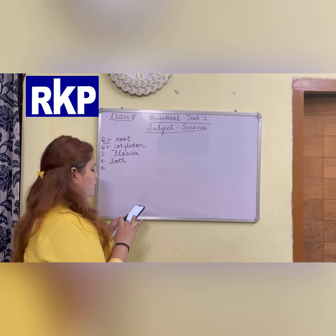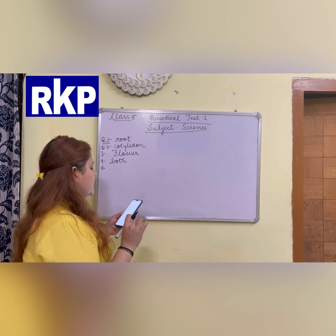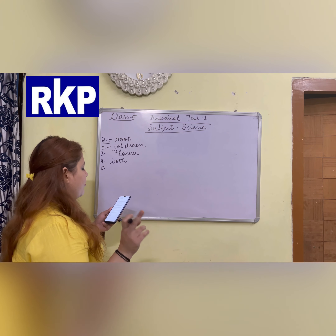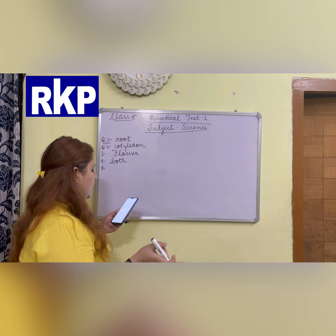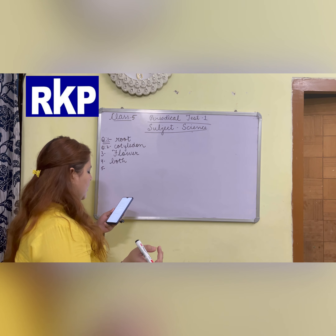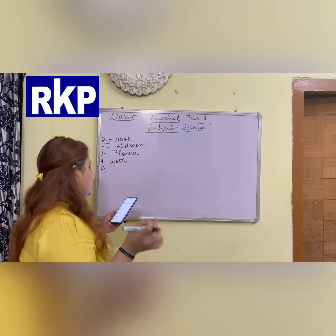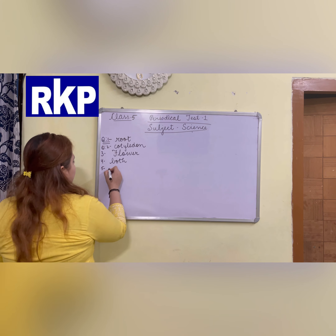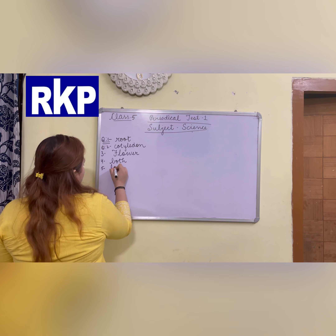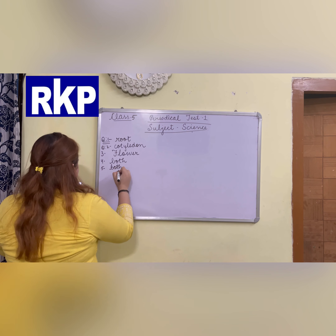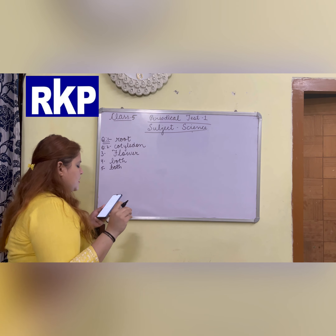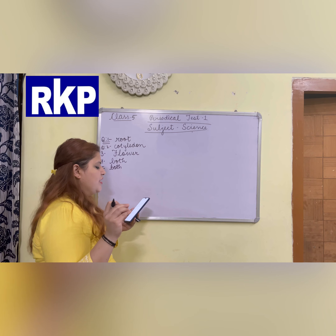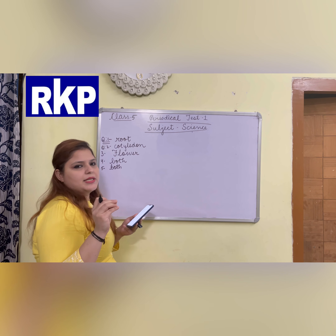Fifth question: which type of seeds can easily disperse through wind — seeds which have a fibrous outer covering, seeds which have hair and wing-like structure, seeds which are light in weight, or both B and C? The answer is both B and C, because seeds that are very light in weight as well as seeds that have hair or wing-like structure can easily be carried away by the wind.